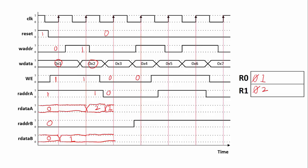We just have to check if the read address changes. In this clock cycle, read address A stays the same for the entire clock cycle so nothing changes there, whereas the read address for B changes mid-clock cycle — so we're going to have a one coming out, staying one up until that point, then it switches its read value to two right before the end of the clock cycle. For this clock edge, write enable is still zero so no register values change. Read address A changes mid-clock cycle from register zero to register one, so the value being read changes from one to two. The read address for B stays the same, so nothing changes for B.